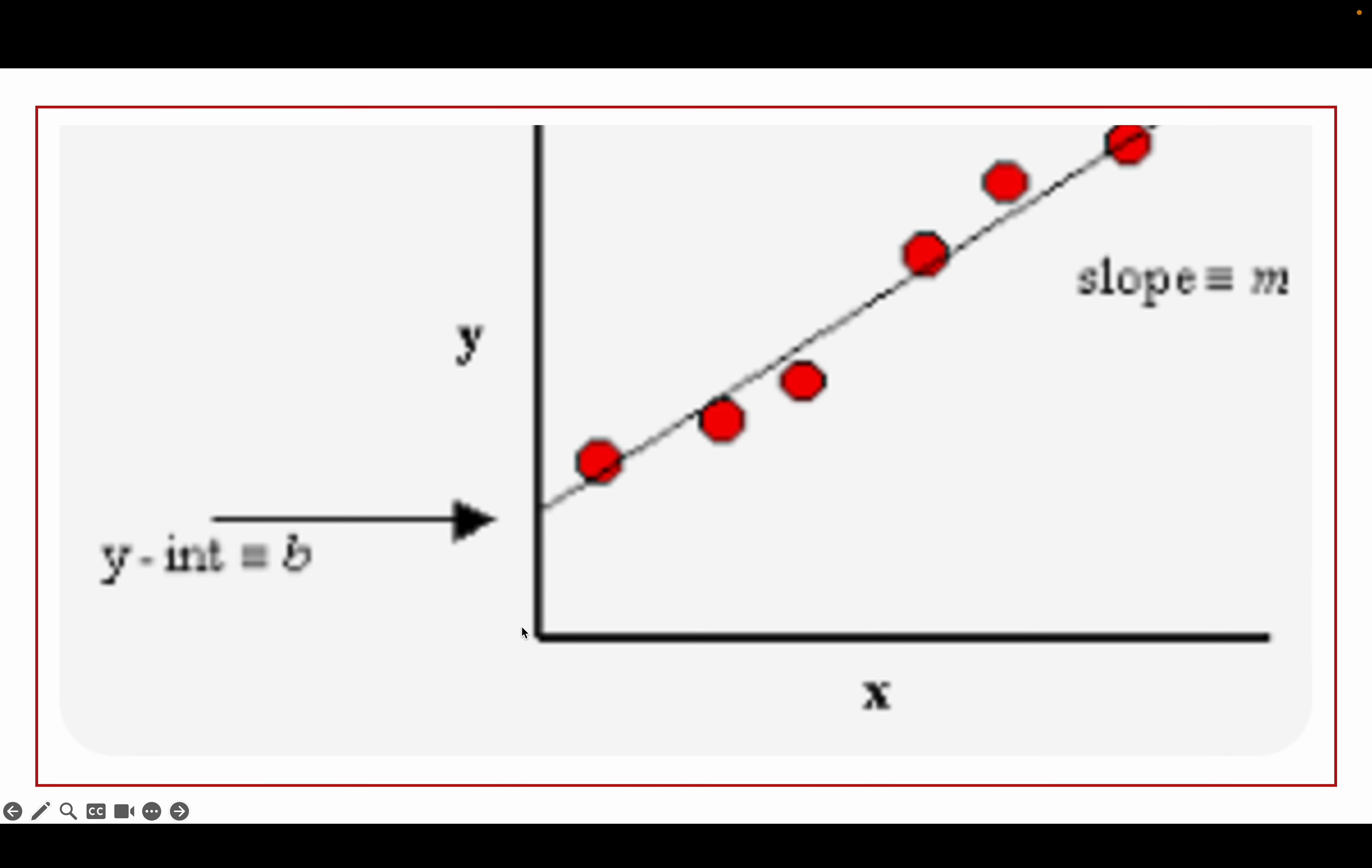It looks a lot like y equals mx plus b when you do the linear regression. So you draw the line right through the middle of the points. The y-intercept is the last part b and the slope is equal to m, so it's very much like y equals mx plus b.